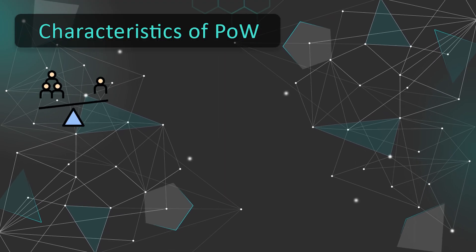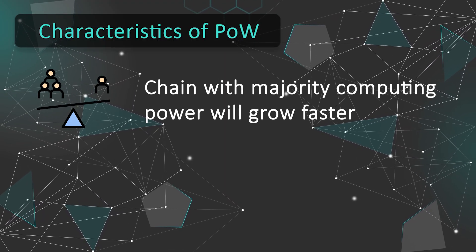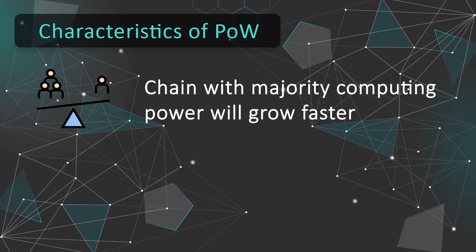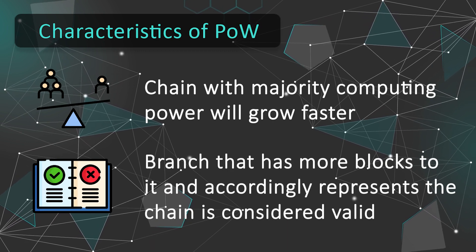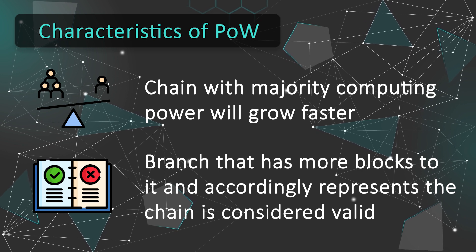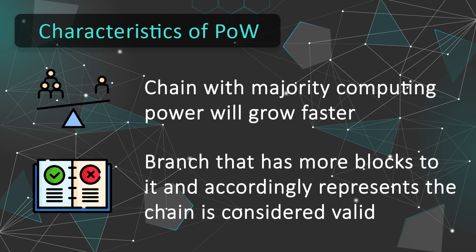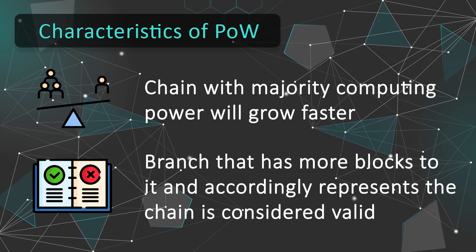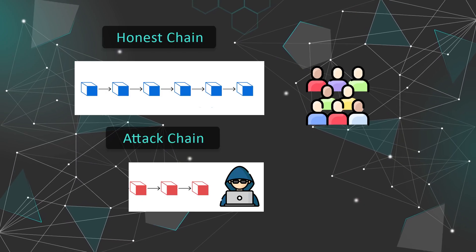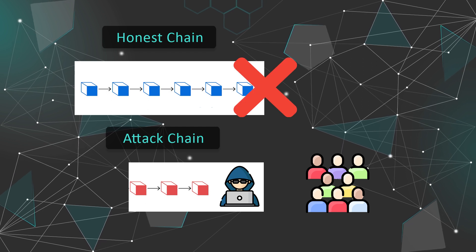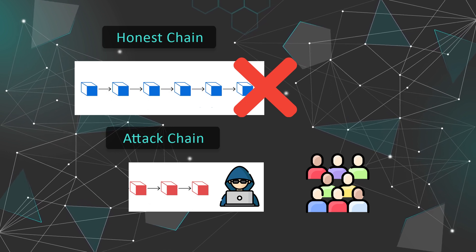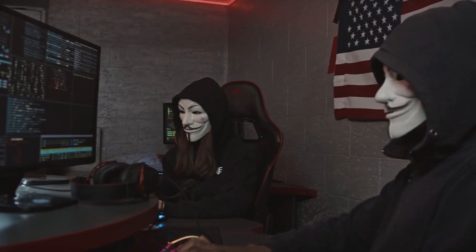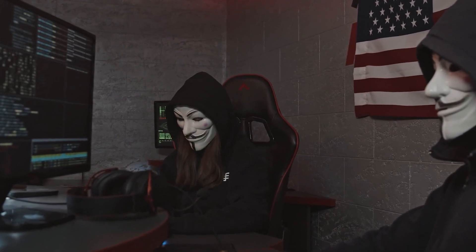If they control a majority of the computing power, their chain will grow faster than the honest chain. The longest-chain rule in proof-of-work governs what happens in case of such a fork — the branch with more blocks, representing the chain created with larger computing power, is considered the valid chain. Once the attacker has received the goods or currency bought with their coins, they broadcast the private branch to the entire network. All honest miners drop the honest branch and start mining on top of the malicious chain. The network treats the attacker's original transaction as if it never happened, so the attacker still controls their funds and can spend them again.